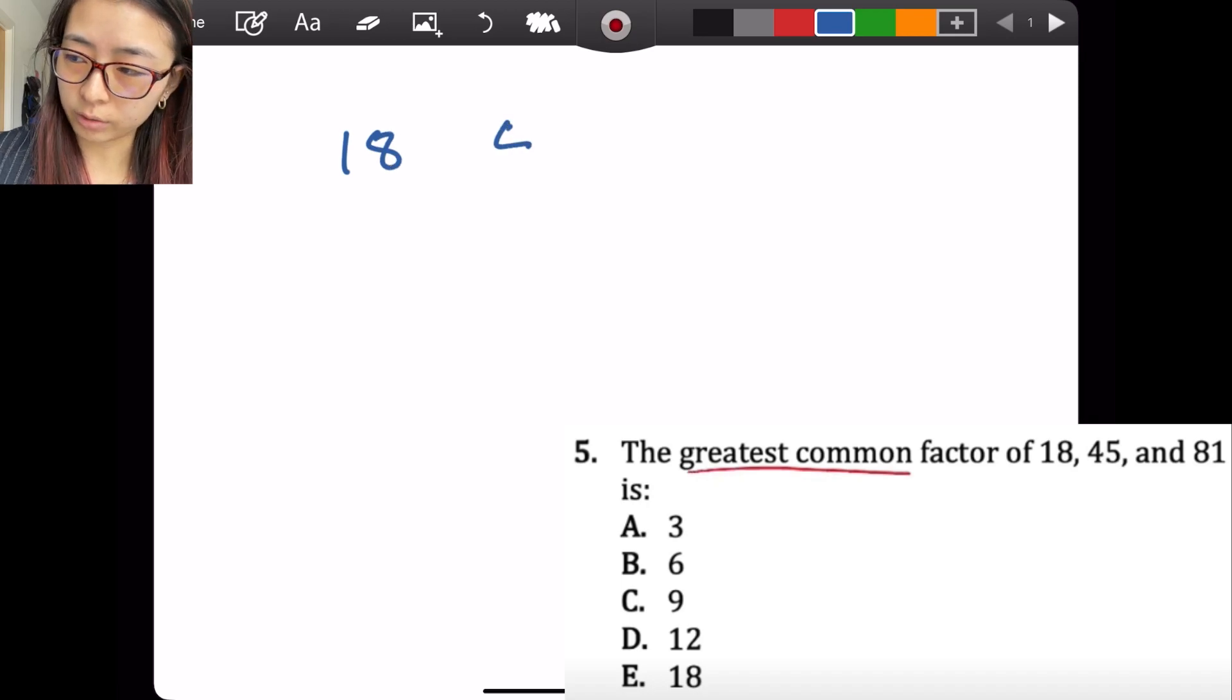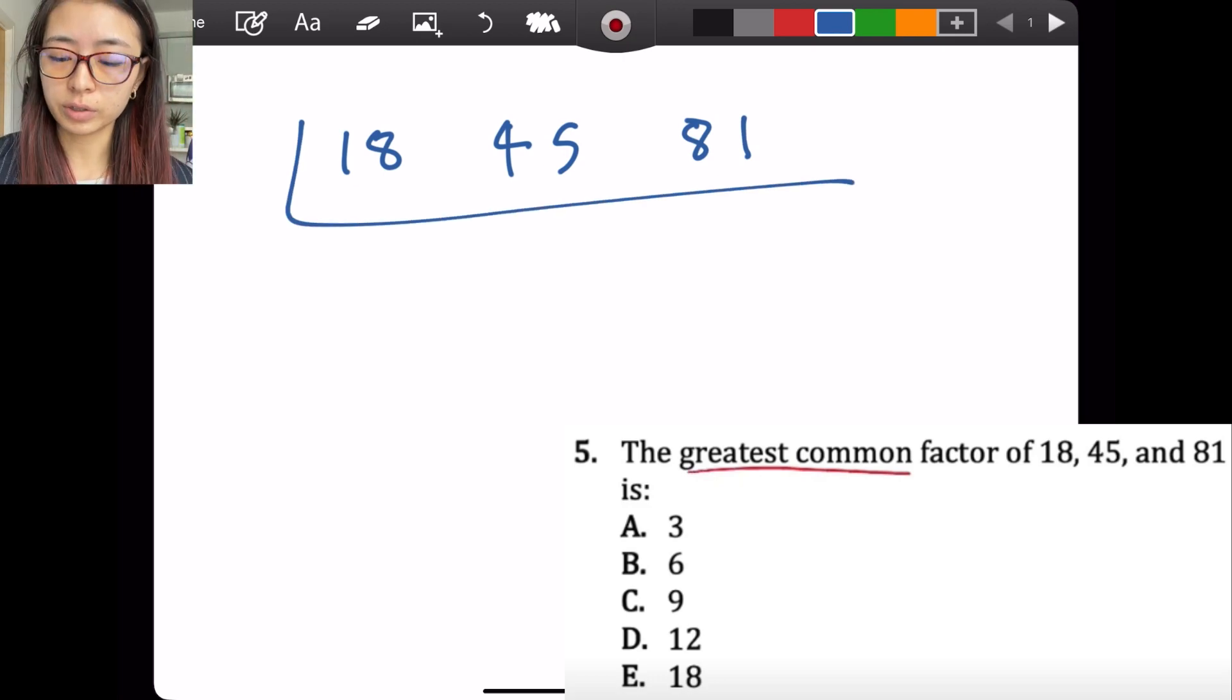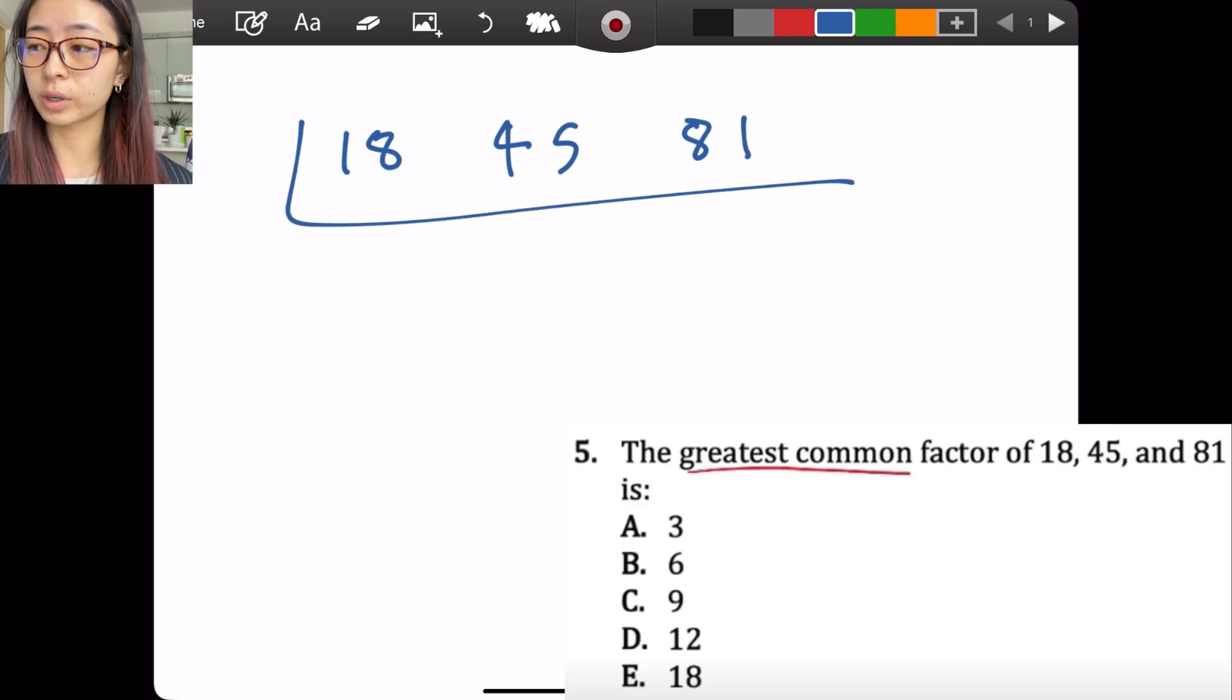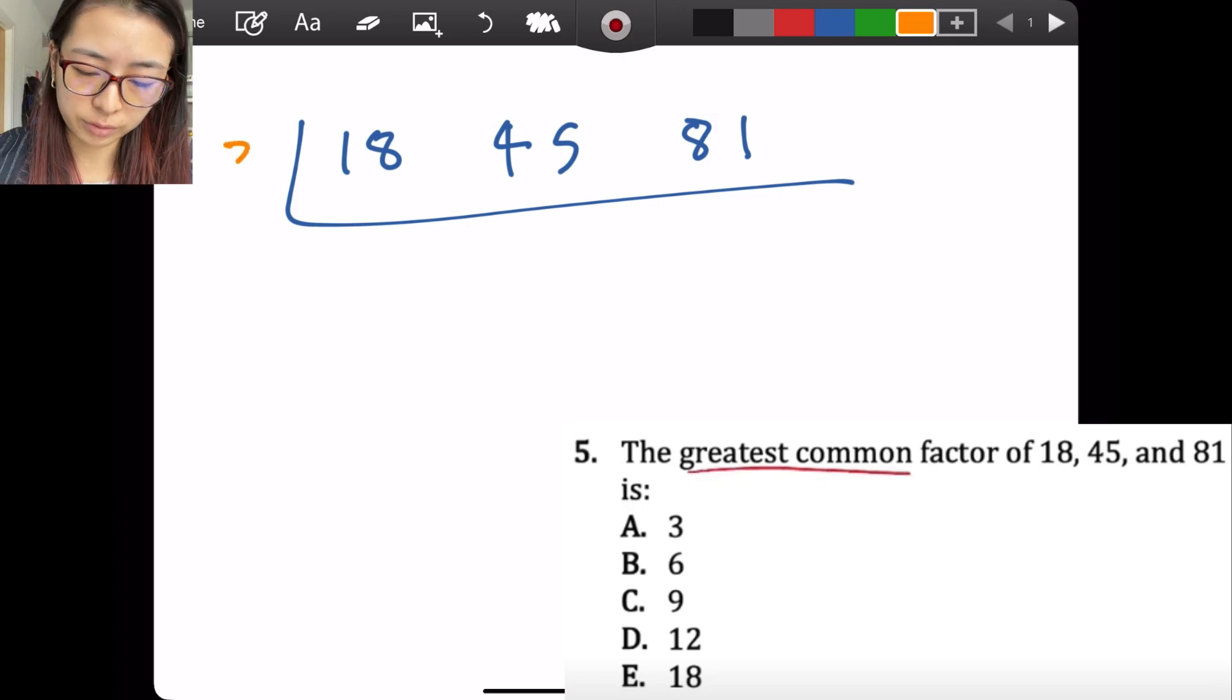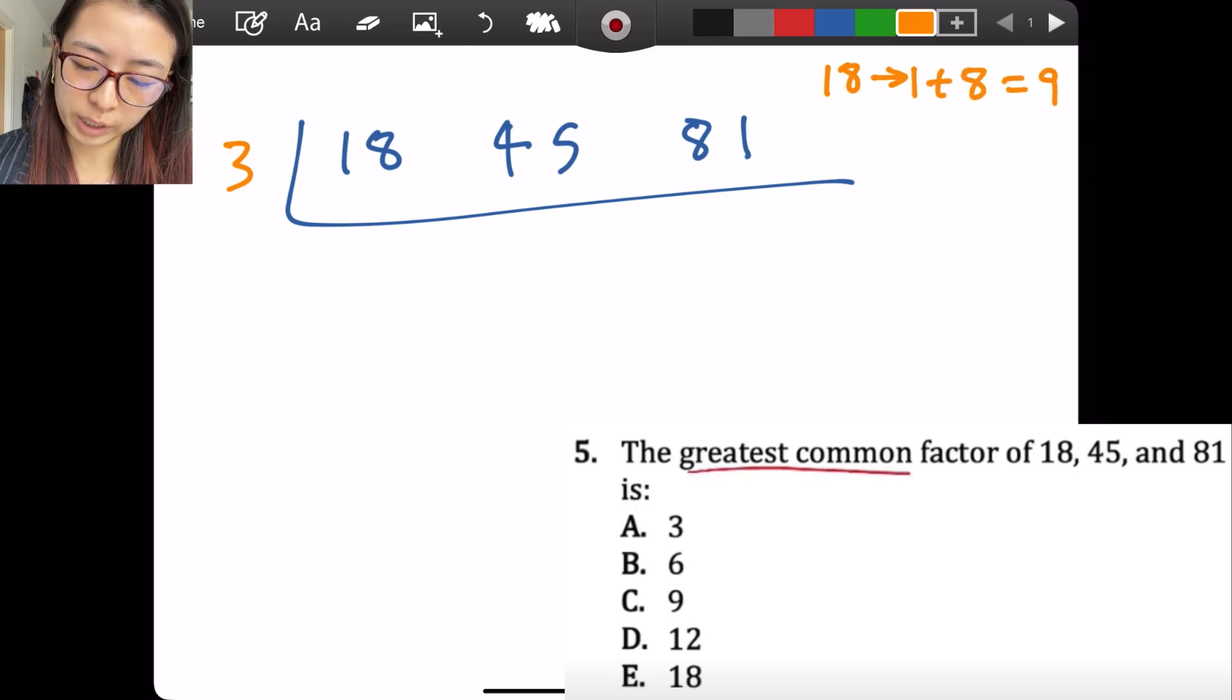For greatest common factor, I write out these three numbers in a row with some space between them and write this L shape. So this is a more efficient way of finding greatest common factor or least common multiple. First, I'm just going to find a small common factor between these, so I see that 3 is a common factor. How do I know that? There is a trick: basically, you know that a number is divisible by 3, like 18, if the sum of the digits is divisible by 3. So 1 plus 8 is 9, which is divisible by 3. 4 plus 5 of 45 is 9, which is also divisible by 3. And finally, 81 is also divisible by 3 because it also has a sum of digits equal to 9.